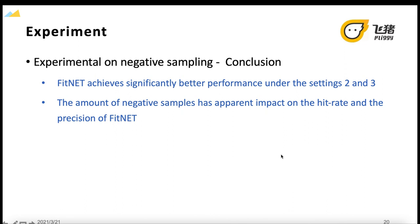However, when a ratio of negative samples exceeds 1 to 10, there is no obvious additional gain over the FitNet model. Therefore, 1 versus 10 is applied as a setting to the amount of negative samples in the following experiments.